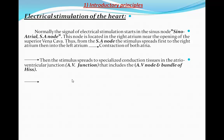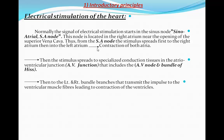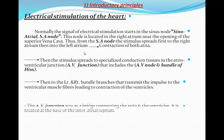Then the stimulus spreads to specialized conduction tissues in the AV junction, which includes the AV node and the bundle of His. Then the left and right bundle branches transmit the impulse to the ventricular muscle fibers, leading to contraction of the ventricles.